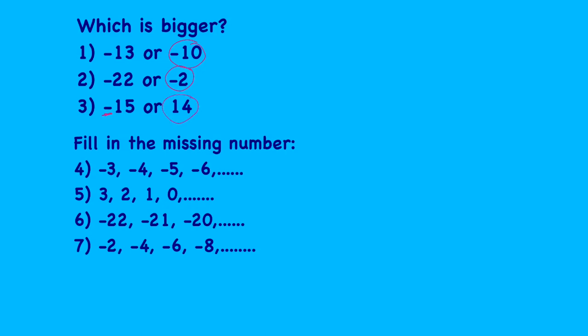Let's move on to the missing numbers. So question 4 says minus 3, minus 4, minus 5, minus 6. So I know that minus 7 is going to come next. And then question 5, 3, 2, 1, 0. And then I know that minus 1 is going to come next. And then question 6, minus 22, minus 21, minus 20. And next is going to be minus 19.